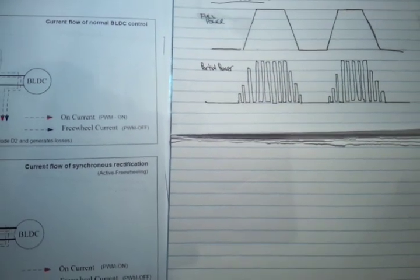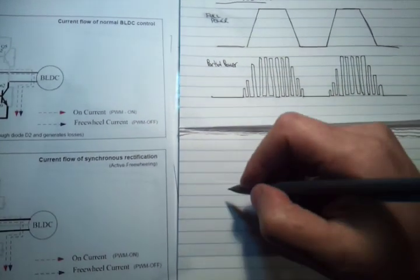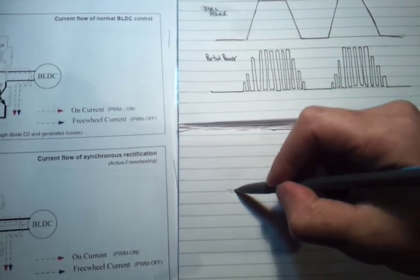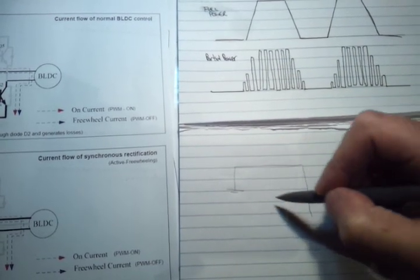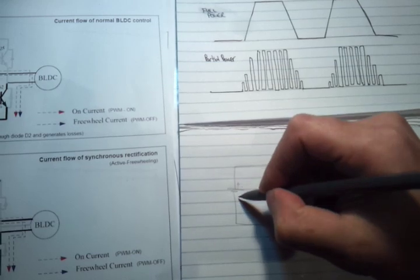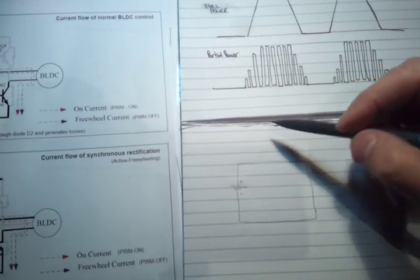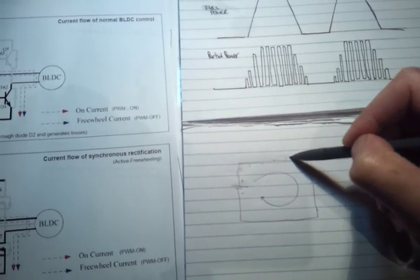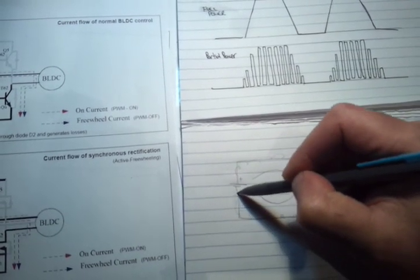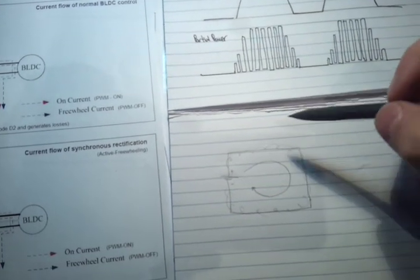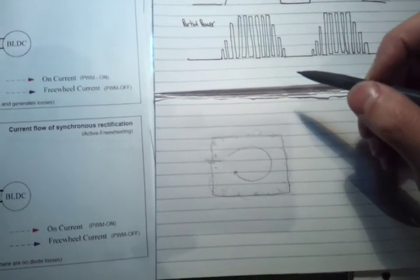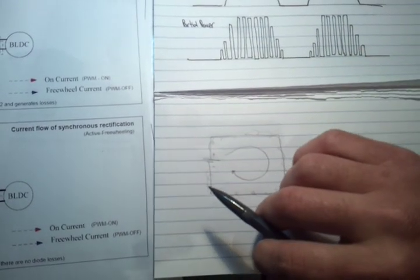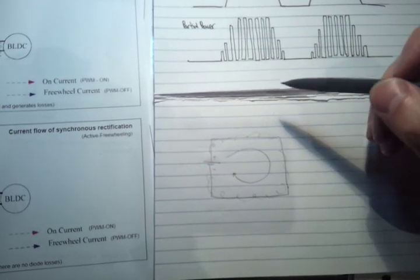Before I explain how active freewheeling works, I just want to demonstrate how circuit inductance affects current flow. Over here we have a basic circuit, and as our current flows through our circuit, we have a magnetic field which is formed, or a magnetic field which rises around the conductor. Now a magnetic field cannot rise instantly, and it cannot collapse instantly, and also a magnetic field cannot exist without current flow, and a magnetic field is also proportional to the amount of current flowing.